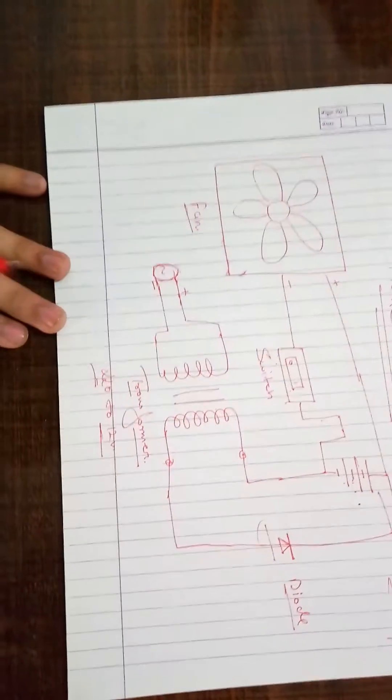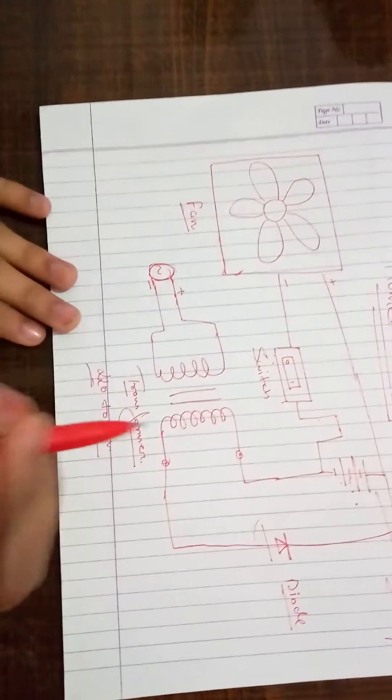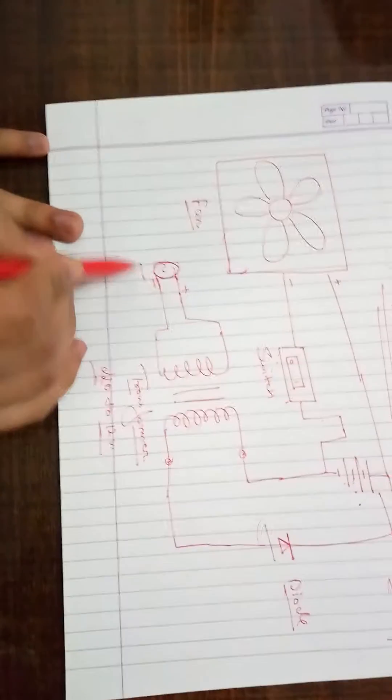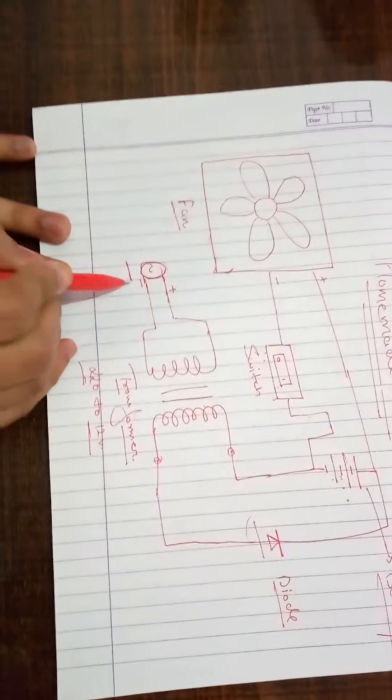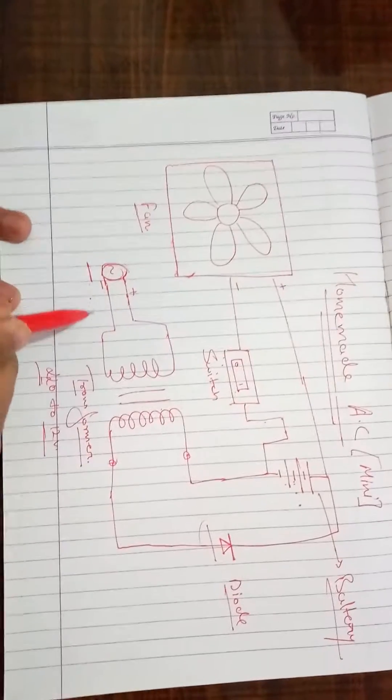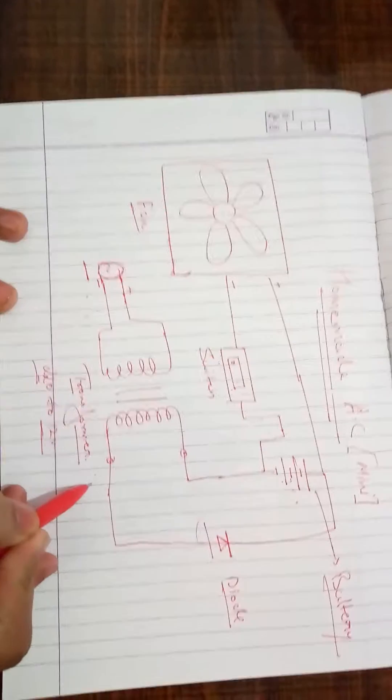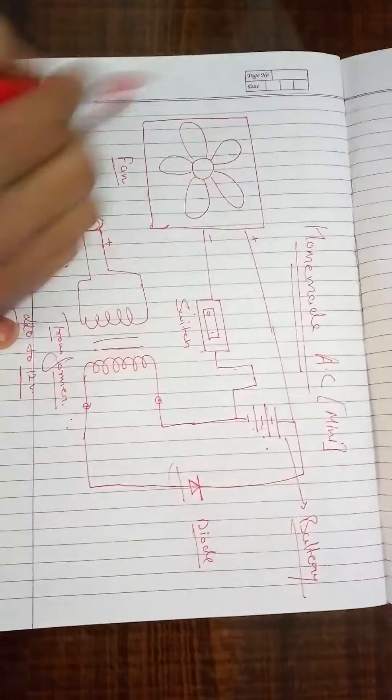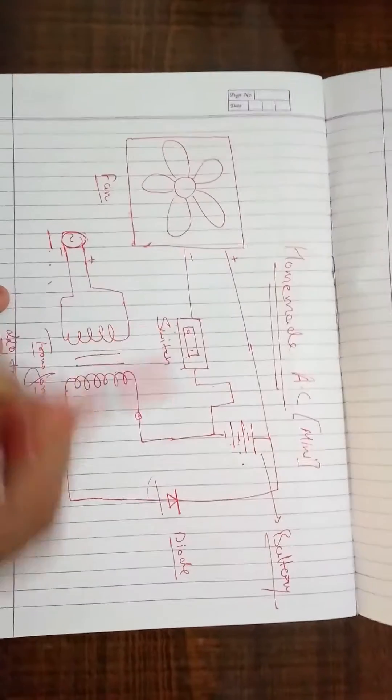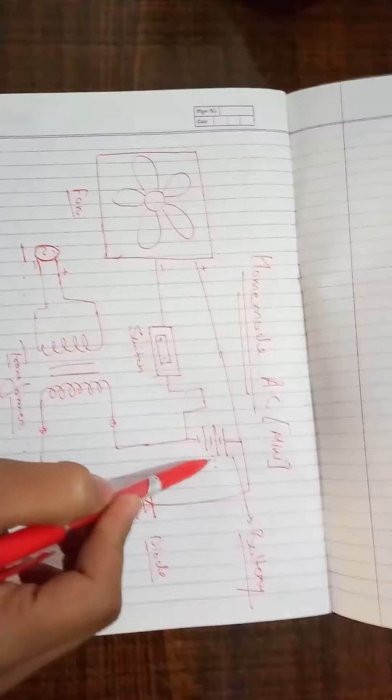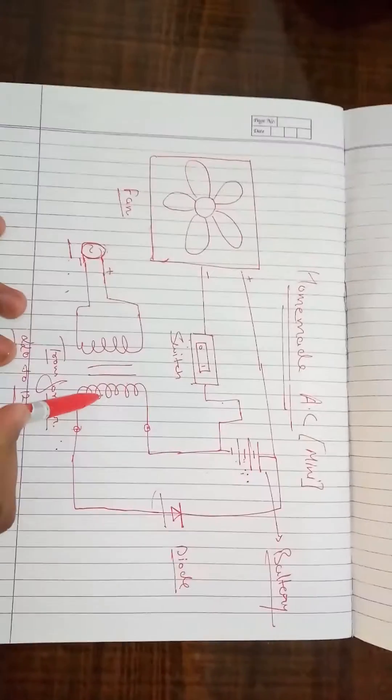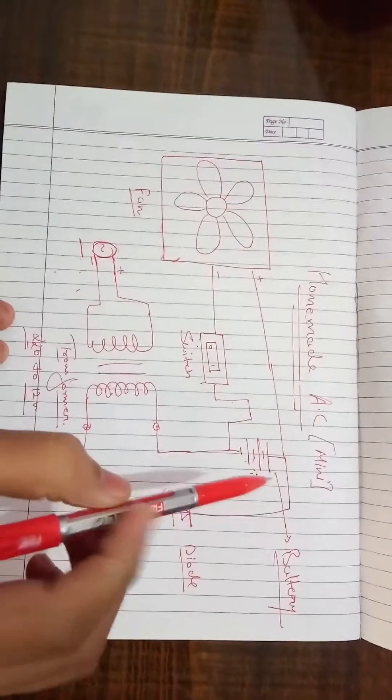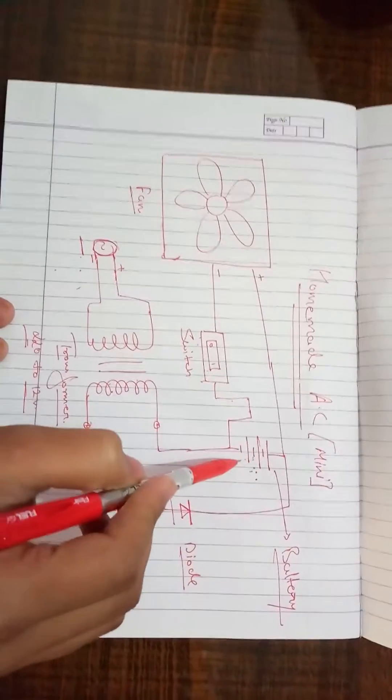Now we have our AC source here. As this transformer is a 220 to 12 volt converter, we can use our AC source. First of all I want to tell you guys transformer never works with DC, therefore we have an AC here which can convert our 220 volt input source into output source of 12 volt.